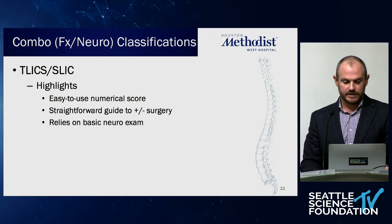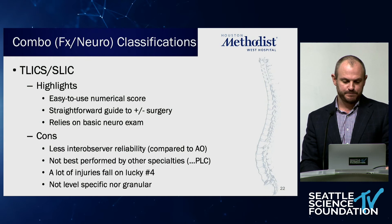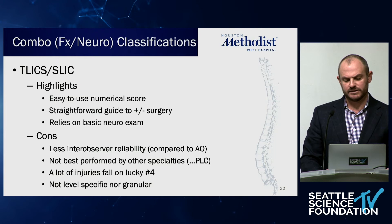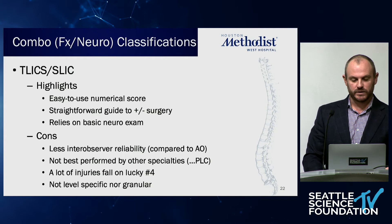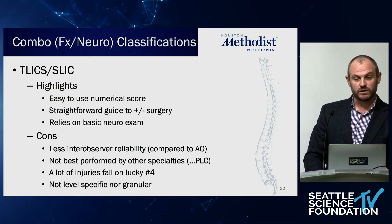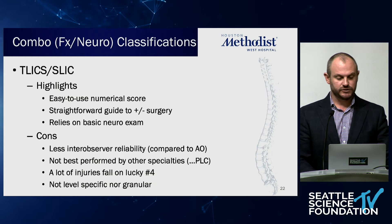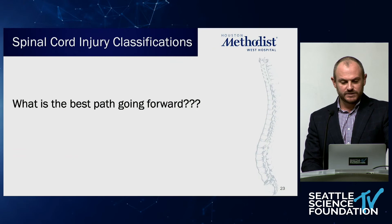TLICS and SLICS provide a very easy-to-use numerical score that's a straightforward guide to whether or not patients need surgery, and they rely on a basic neurologic exam that we all do day to day. Some cons: there is slightly less interobserver reliability compared to the AO system overall. Assessing integrity of the posterior ligamentous complex is a refined skill that traumatologists and ER physicians aren't as well-adapted to identifying. A lot of injuries also fall on that unlucky number four, leaving you still undecided on surgery. And it's not level-specific — it's just 'thoracolumbar,' which doesn't provide granular data.